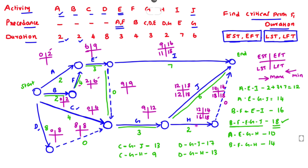For activity G, two succeeding activities give LFT values of 12 and 16; we take the minimum in the backward direction, so LFT of G = 12, LST = 12 − 3 = 9. For activity E: LFT = 9, LST = 9 − 3 = 6. For activity F: LFT = 6, LST = 6 − 2 = 4. For activity B: LFT = 4, LST = 4 − 2 = 2 — wait, 6 − 4 = 2, LST = 2. For activity D: LFT = 9, LST = 9 − 8 = 1.